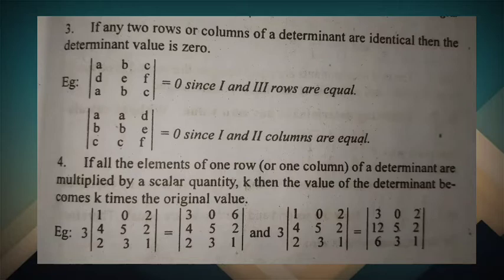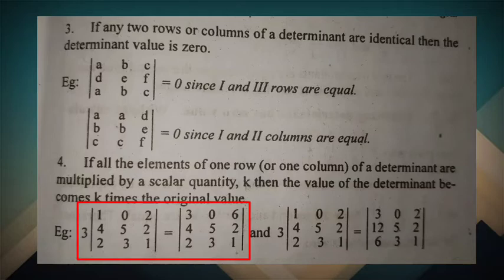Fourth property: if all the elements of one row or one column of a determinant are multiplied by a scalar quantity k, then the value of the determinant becomes k times the original value. For example, the original determinant has elements 3, 0, 6, 4, 5, 2, 2, 3, 1. If we multiply by 3, the determinant value becomes 3 times the value of the original determinant.